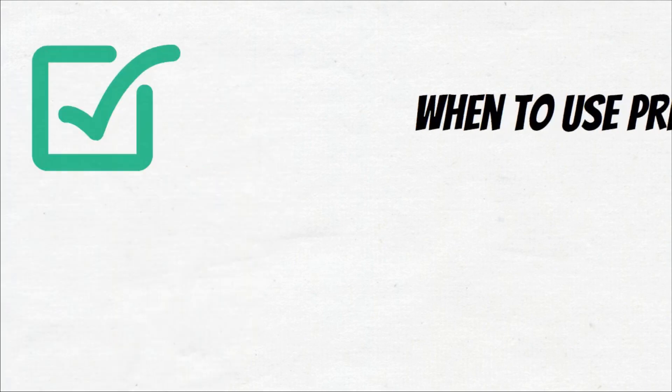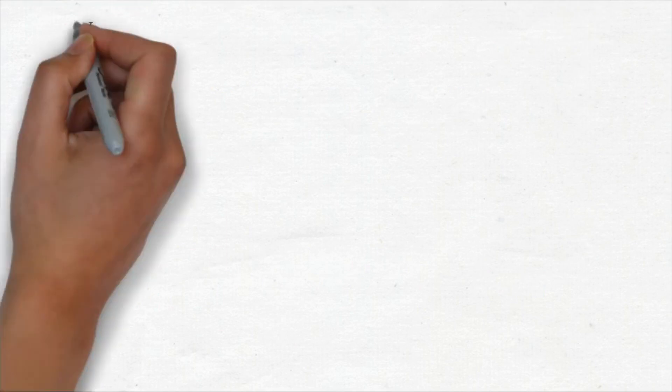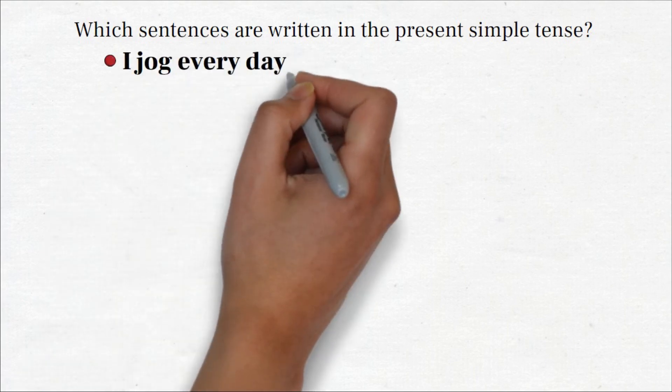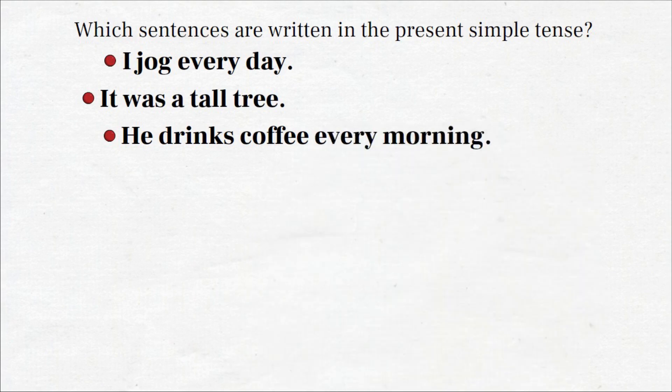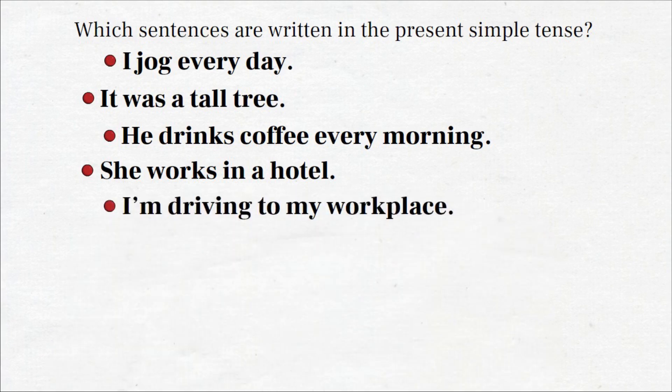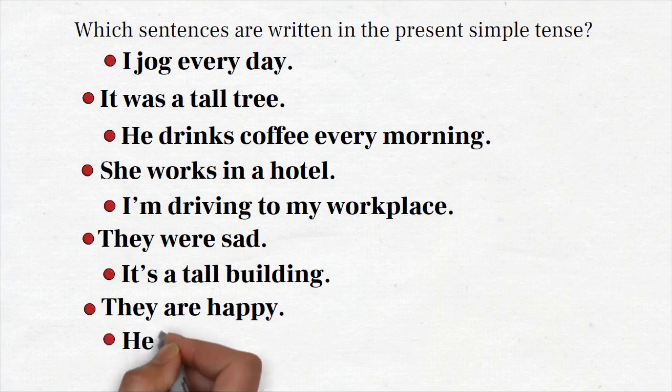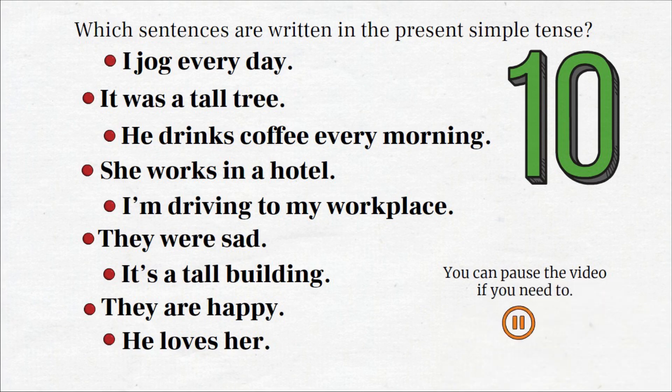Okay, now that we know when to use present simple and how to form it, it is time for a test. Can you recognize which sentences are written in the present simple tense? I jog every day. It was a tall tree. He drinks coffee every morning. She works in a hotel. I'm driving to my workplace. They were sad. It's a tall building. They are happy. He loves her. Okay, you will now have 10 seconds to complete this, but don't worry, you can pause the video if you need to. Alright, let's go.